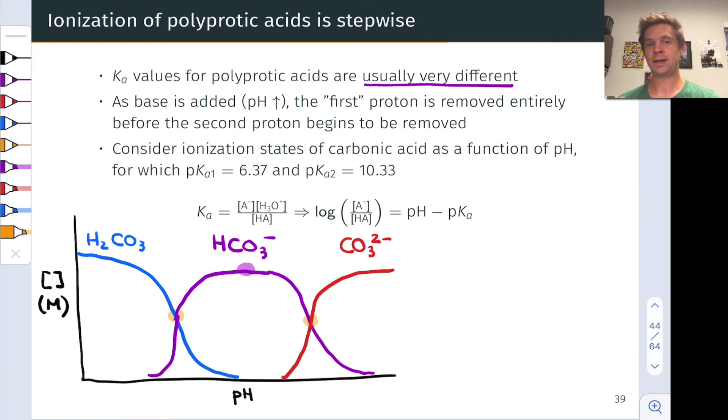These are what we'll call buffers in future discussions of acid-base solutions, and polyprotic acids have multiple possible buffer systems at the two points highlighted in orange.